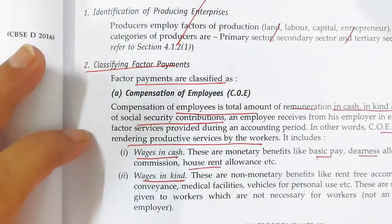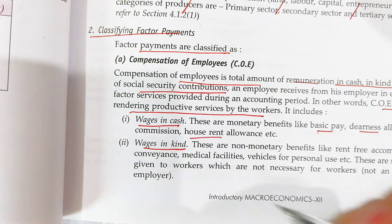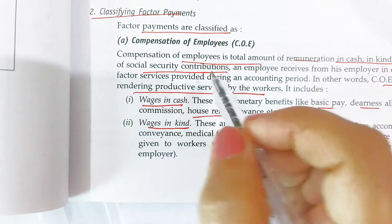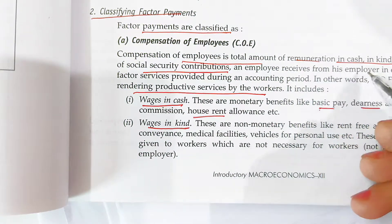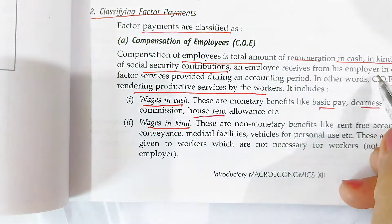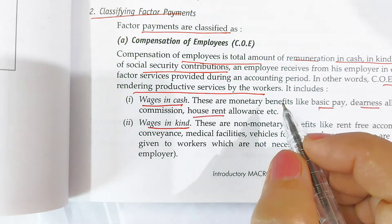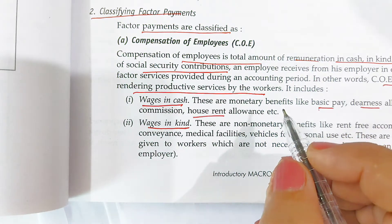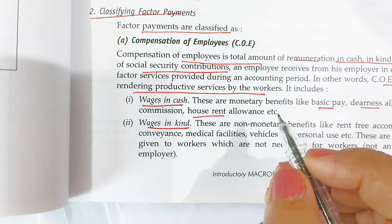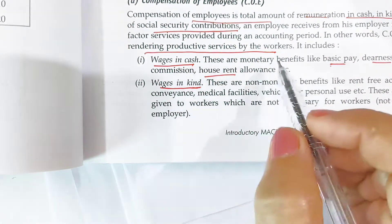Now we will discuss which type of factor payments are part of it, and which factor payments we do not add to find out domestic or national income. The first factor income is called compensation of employees. Compensation of employees is the total reward — the remuneration in cash, kind, or any other form of social security contribution — given to an employee by his employer for his services during an accounting year.